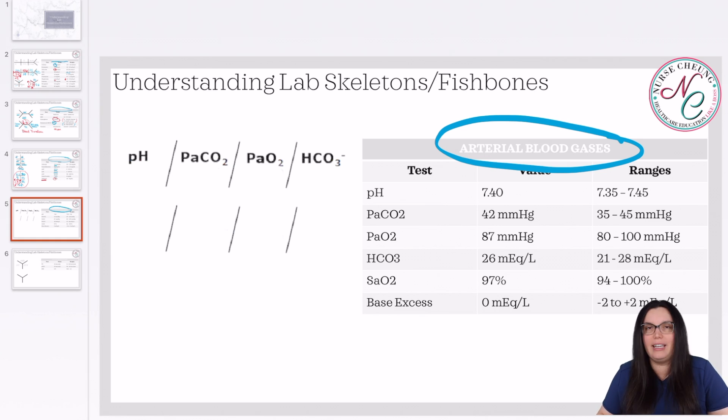But moving back into this fish skeleton, again, we're going to be looking at our values and determining what's normal and abnormal and writing it into our skeleton appropriately. So we begin with our pH. Well, our pH looks pretty good, right? It's normal. So we write in our 7.4. Our CO2 is also within normal. So we're going to write that in 42. Our PaO2, 87. That looks good, right? 87 to 100. It's normal. We write that in. And our bicarb is 26. Again, this is normal. So we have a normal ABG.